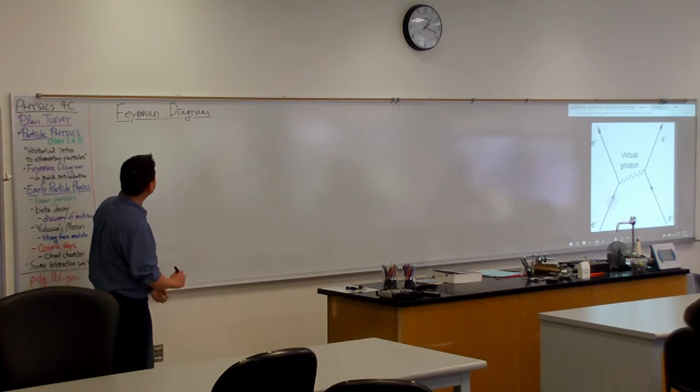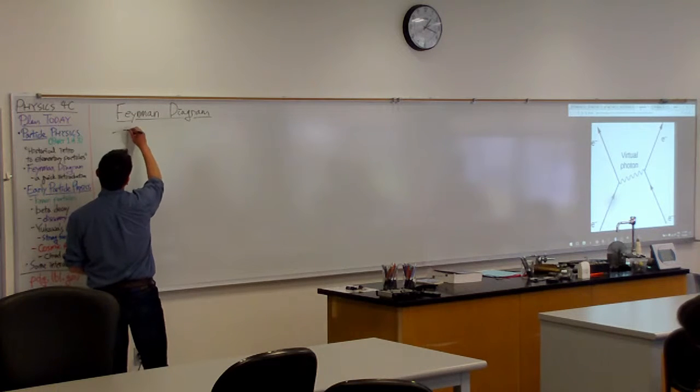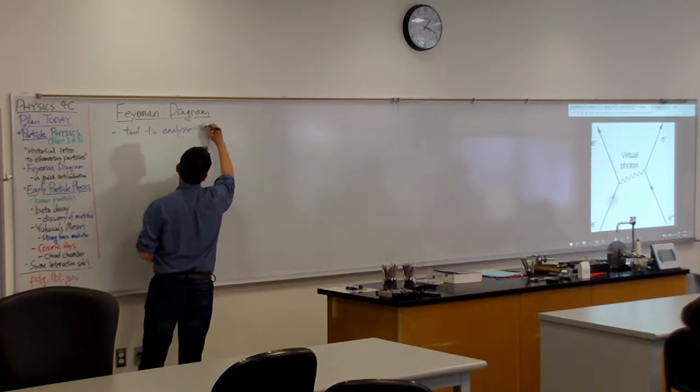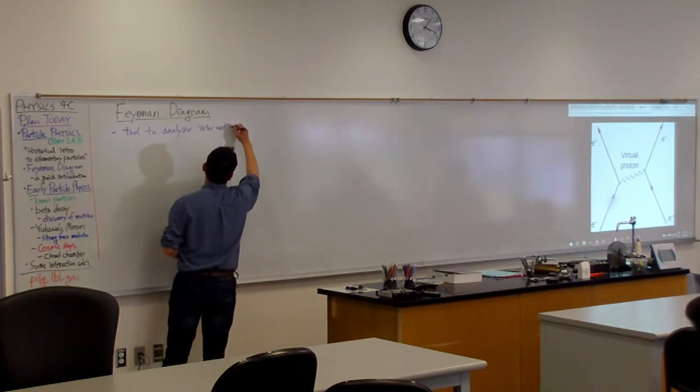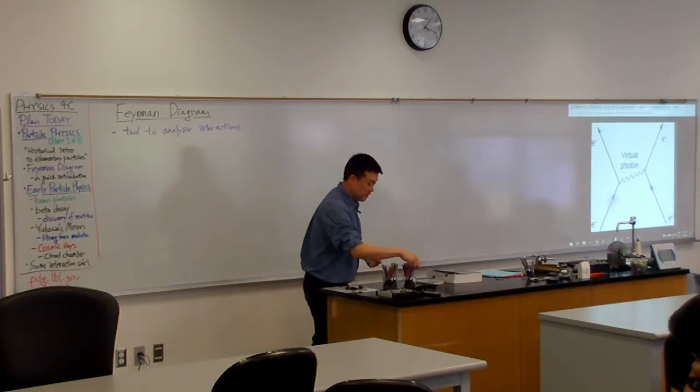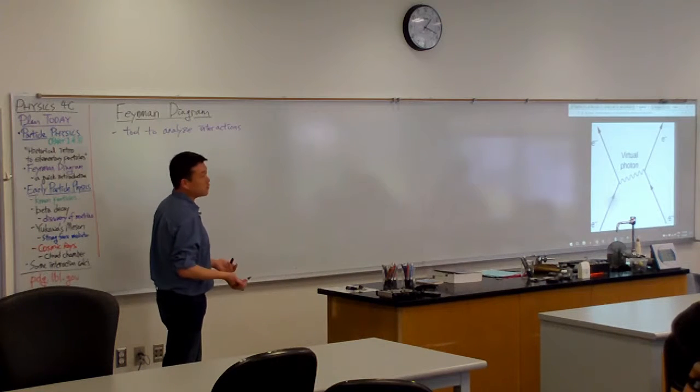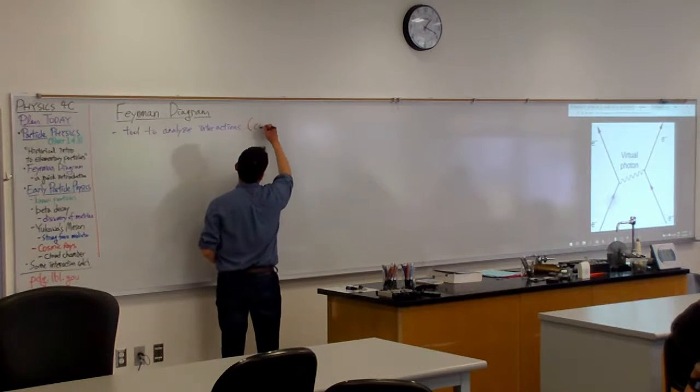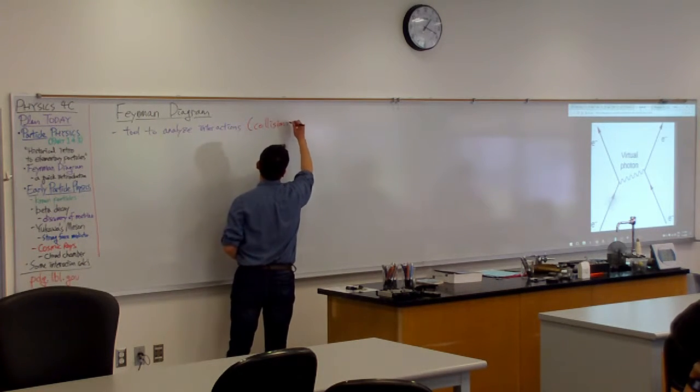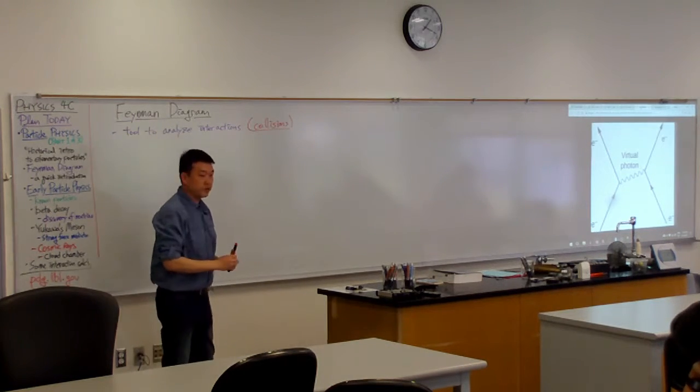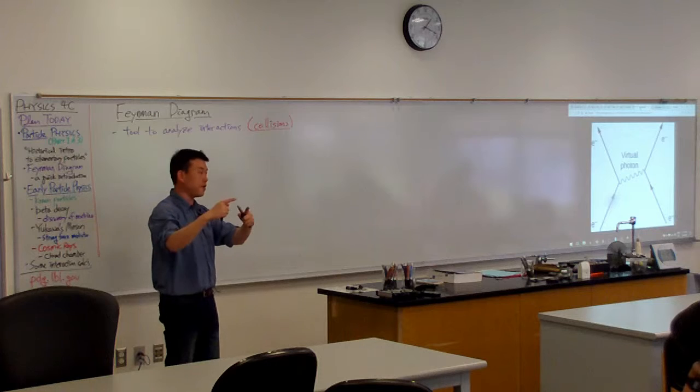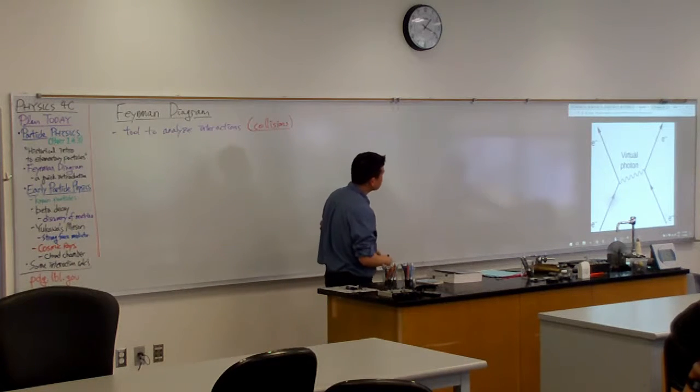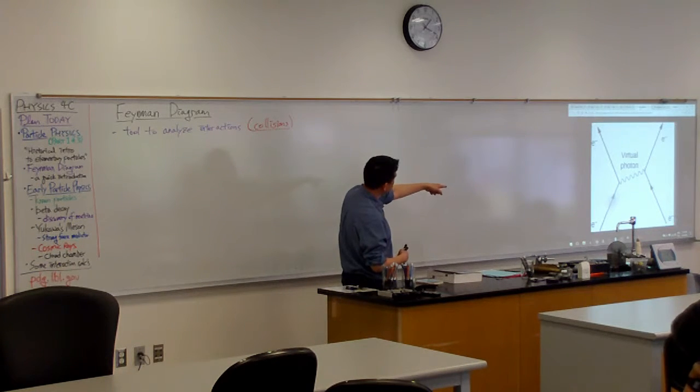So Feynman diagram, what it is, it's a tool to analyze interactions. And even though it can be used to analyze many different types of interactions, most of the interactions that can be analyzed using Feynman diagrams, they are going to be analyzed as collisions. As in, you imagine two particles coming together, they collide, and then something happens.